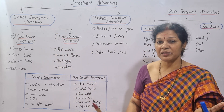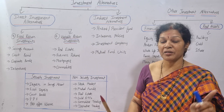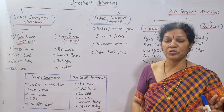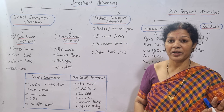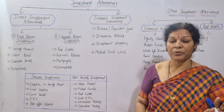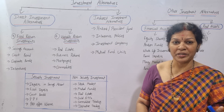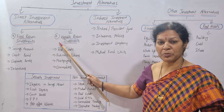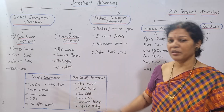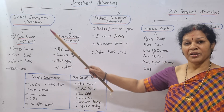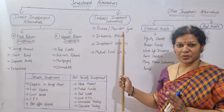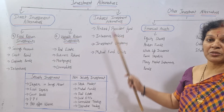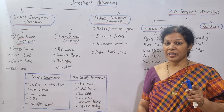So that covers direct investment alternatives — where the investor invests directly with a good idea of where they are putting their money, with no mediators. We discussed fixed return investments and variable return investments. Now let's go to the other alternative: indirect investment alternatives.